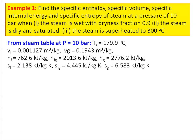From the steam table, Table 2, at pressure P = 10 bar (pressure table): saturation temperature 179.9°C, Vf = 0.001127 m³/kg, Vg = 0.1943 m³/kg, Hf = 762.6 kJ/kg, Hfg = 2013.6 kJ/kg, Hg = 2776.2 kJ/kg, Sf = 2.138 kJ/kg·K, Sfg = 4.445 kJ/kg·K, and Sg = 6.583 kJ/kg·K.